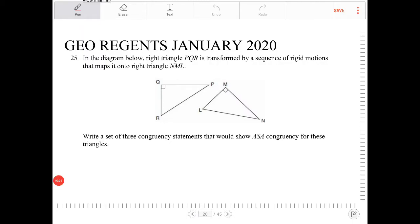In the diagram below, right triangle PQR is transformed by a sequence of rigid motions that maps it onto right triangle NML. Write a set of three congruency statements that would show ASA congruency for these triangles.